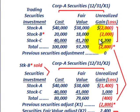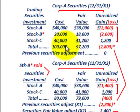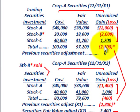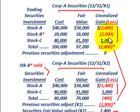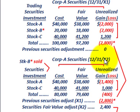Looking at them as a group, the total cost of all stocks is $100,000 and the total fair value is $97,200. Since fair value is less than cost, the net difference is a $2,800 unrealized loss on these securities at year-end X1. For this example, we don't have any previous adjustments, so we simply record the $2,800 unrealized loss.